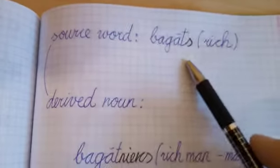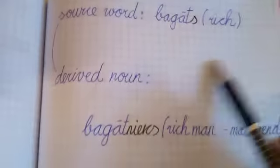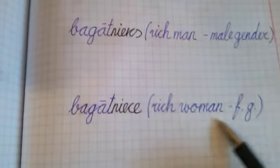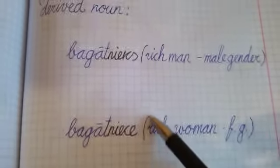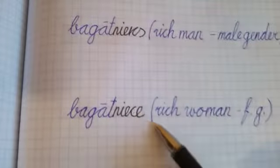Next source word, bagats, rich. Derived noun: bagatnieks, rich male gender. Bagatniece, rich woman, female gender. Removing s and adding ending inieks or iniece.